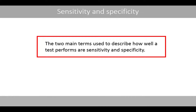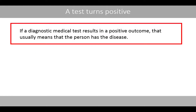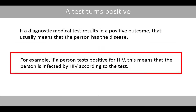The two main terms used to describe how well a test performs are sensitivity and specificity. If a diagnostic medical test results in a positive outcome, that usually means that the person has the disease. For example, if a person tests positive for HIV, this means that the person is infected by HIV according to the test.